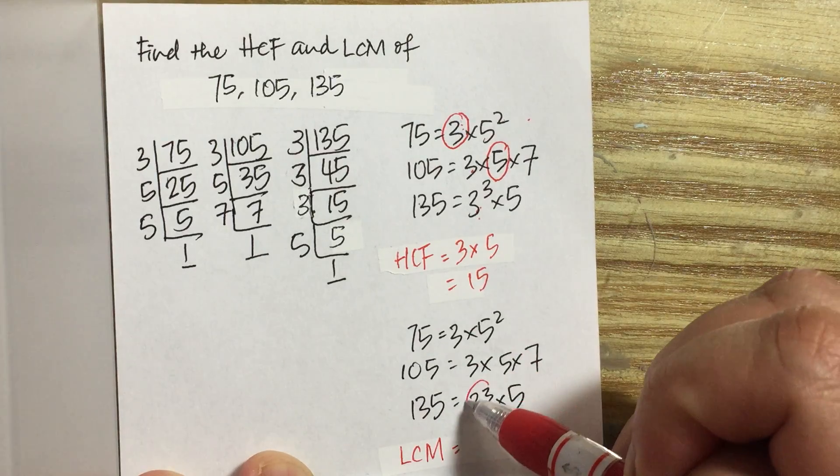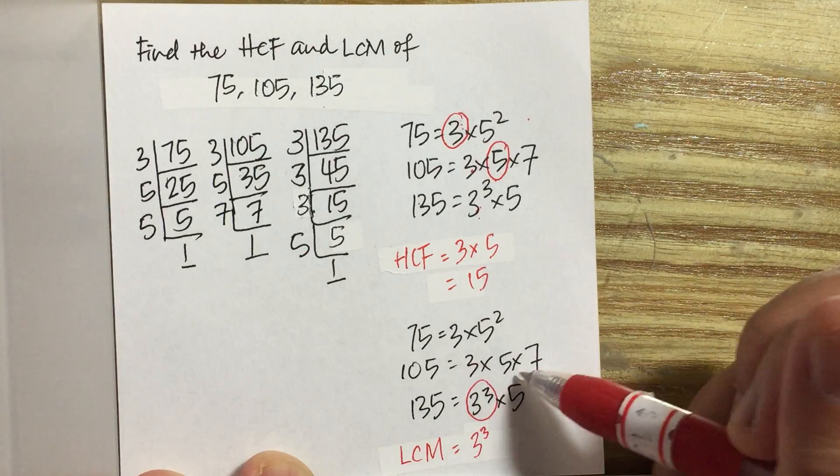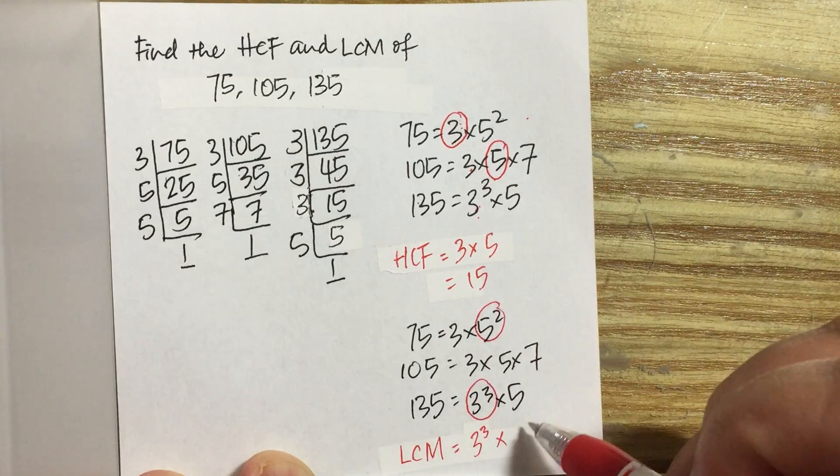Here, this has the highest power, so we have 3 cubed. And for 5 squared, 5, 5, of course the highest power is 5 squared here.